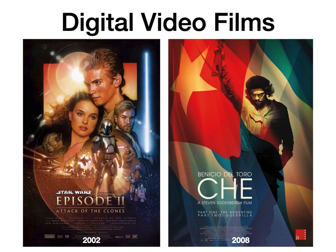You see these digital technologies being used in a wide variety of different movies. On the left, Star Wars Episode II was famously one of the first films using this entirely digital process of filmmaking. In 2002, it was a huge deal. Nobody had done something like that before, and nobody was really sure there was a long-term future for this mode of practice.